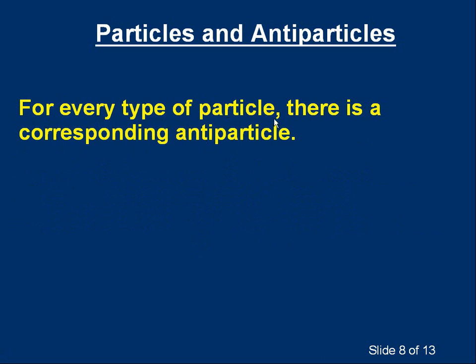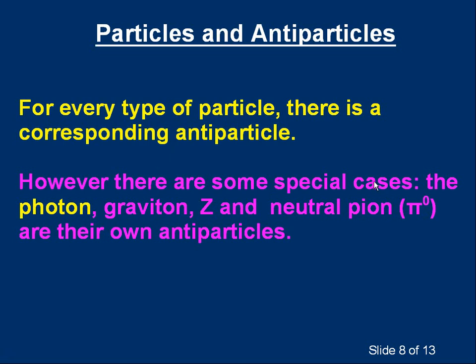However, there are some special cases you should be aware of. The photon, something called a graviton, a particle called a Z particle, and a particle called a neutral pion, pi zero — these are rather unusual. They are their own antiparticles. When you reverse the properties, you get the same particle back. They don't annihilate themselves if two of them meet, but they are regarded as their own antiparticles. The important one at this stage is the photon: the photon and an antiphoton are one and the same thing.